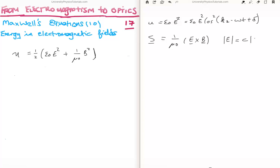And we also know that the magnitude of the electric field is C times the magnitude of the magnetic field. Putting this all together, we get that the value for the Poynting vector is C times epsilon zero, multiplied by the magnitude of the magnetic field, multiplied by the magnitude of the electric field, squared, multiplied by cos squared, and it's kz minus omega t plus delta.